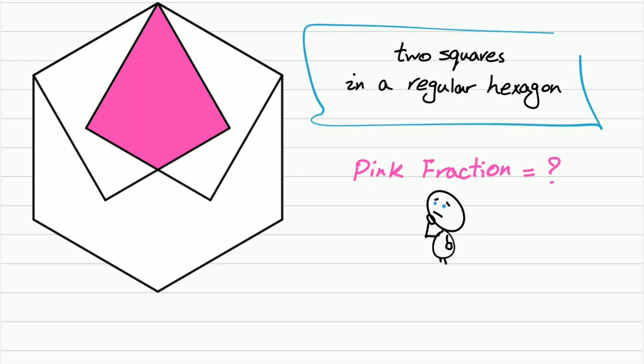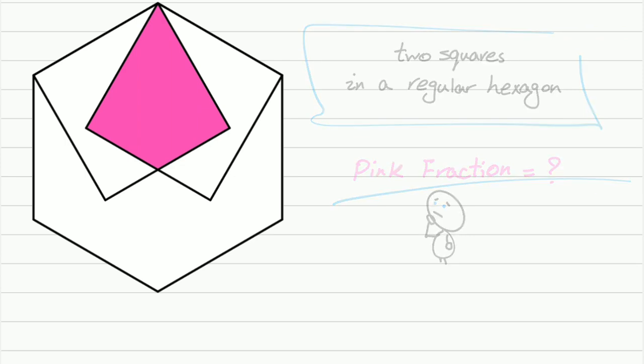Two squares in a regular hexagon. This is daily math and here we have a geometry problem. We want to find the pink fraction — the ratio of the pink area to the total area of the hexagon. Give it a try and watch the solution. You can solve this.